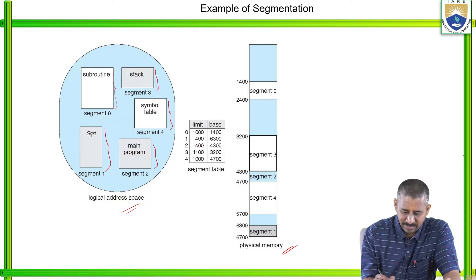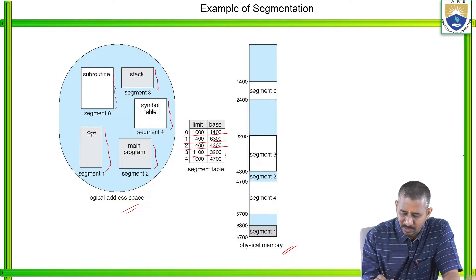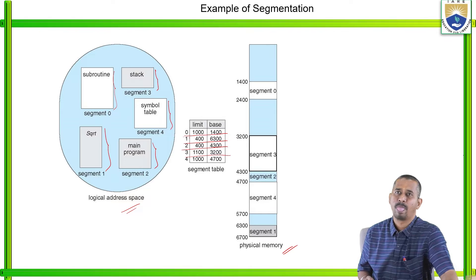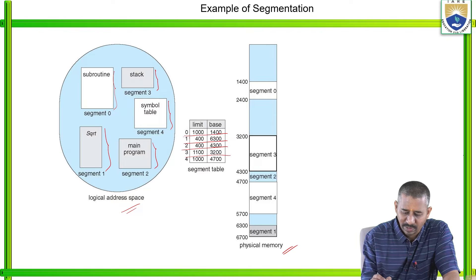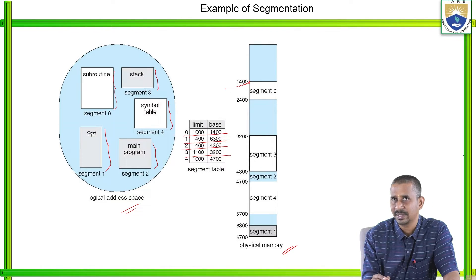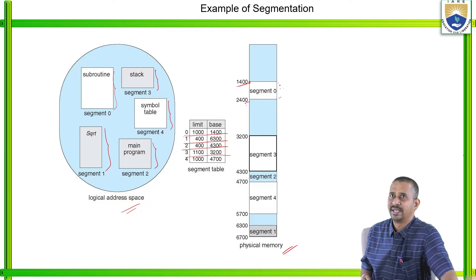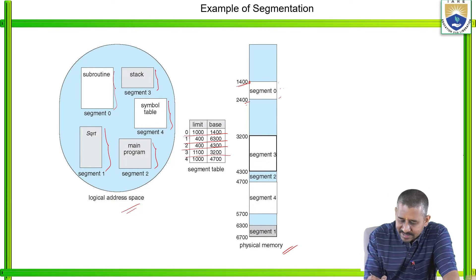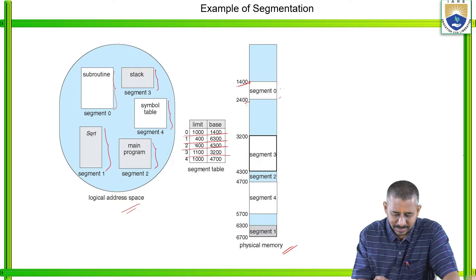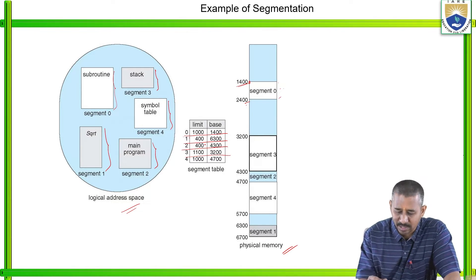The segment table consists of base and limit. For segment 0, the base is 1400 and the limit is 1000, giving address range up to 2400. For segment 1, the base is 6300 and the limit is 400, covering addresses up to 6700. The physical memory allocates various segments according to the segment table.